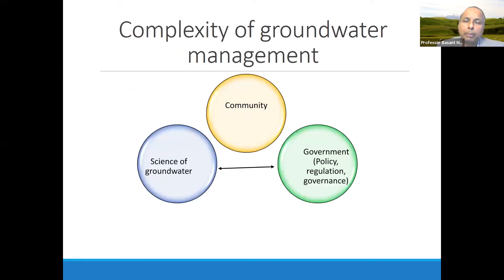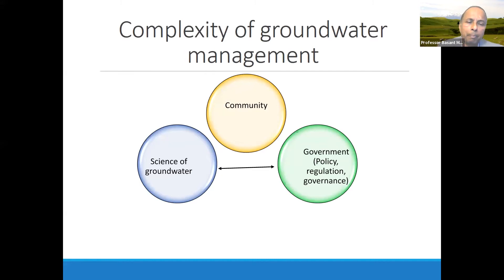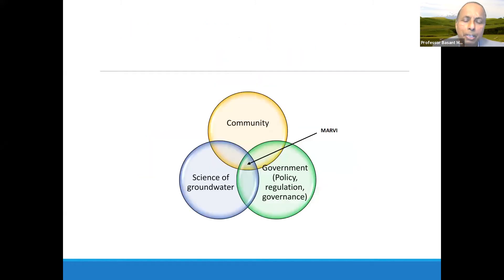The MARVI approach has three elements: the science of groundwater, community, and government. Often scientists work with government in terms of funding, or government has programs to work with the community — but not all working together. That's what we tried to do in the MARVI project: we brought the community, the science, and the government stakeholders together.